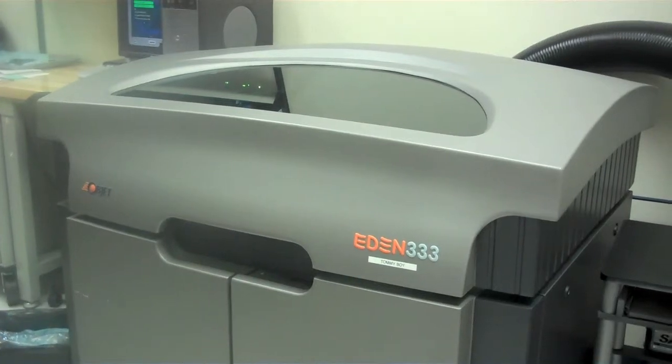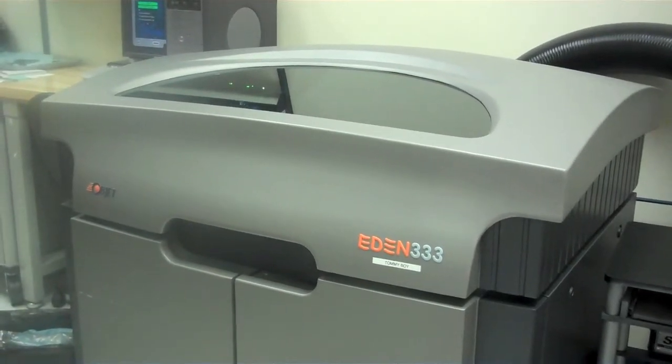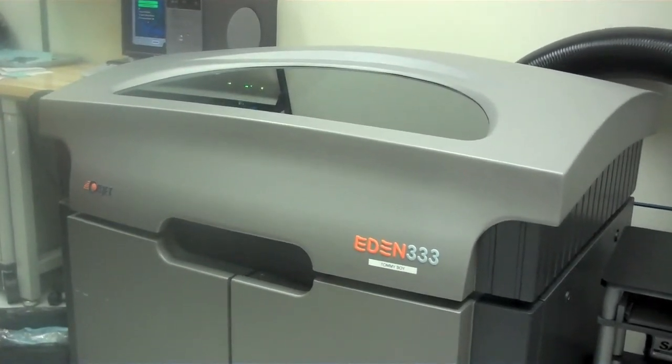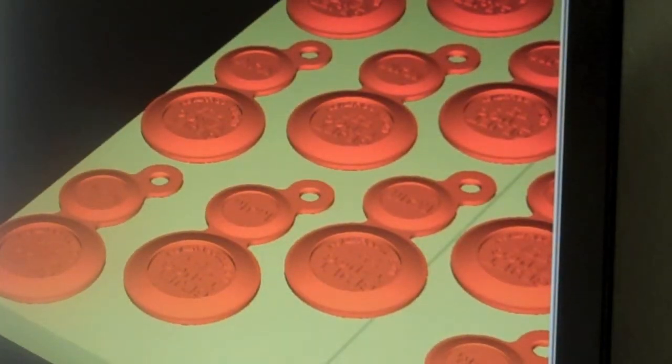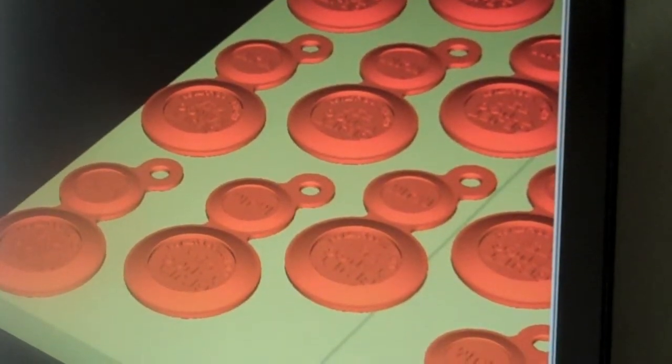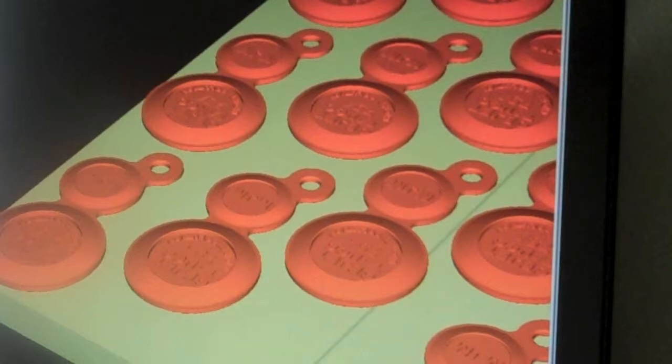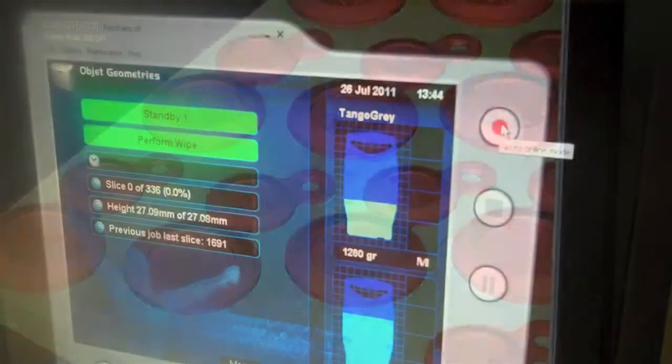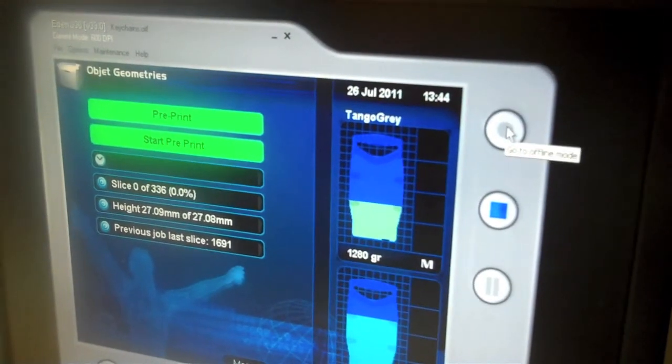This is one of MyDEA Technologies' Objet machines. The Objet machine uses the PolyJet process to build 3D parts. The process begins with a 3D CAD model. The part is first designed in 3D CAD software and then sent to the Objet machine, which is essentially a 3D printer.